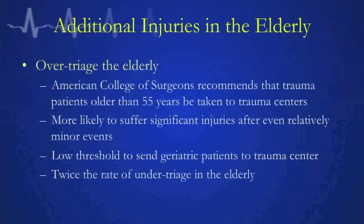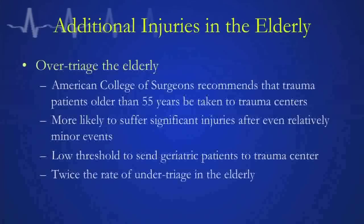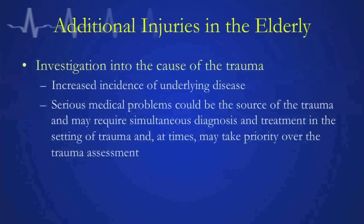Not just the American College of Surgeons, but all groups independently reviewing geriatric trauma agree: patients 55 years or older with significant trauma should go to a trauma center, and even more so for patients 65 or older — they should be going to the trauma center directly. The theory is that elderly patients have more severe injuries based on lower mechanisms of injury than the normal population group. The underlying factors we've discussed — the aging process, polypharmacy, comorbidities — things the normal population doesn't have to deal with — set up the geriatric population for a lot of bad things that minor trauma can ensue.